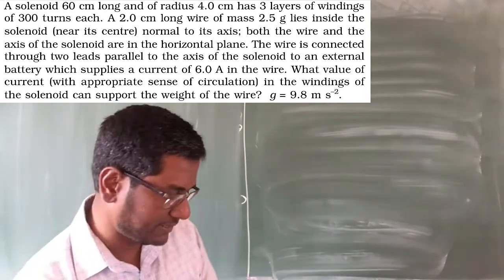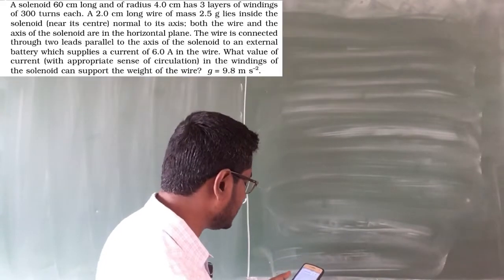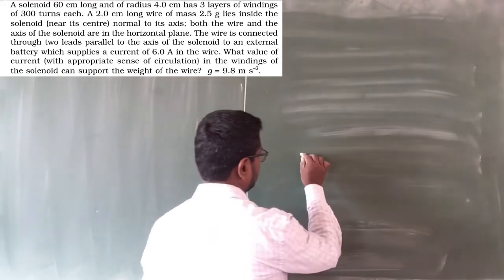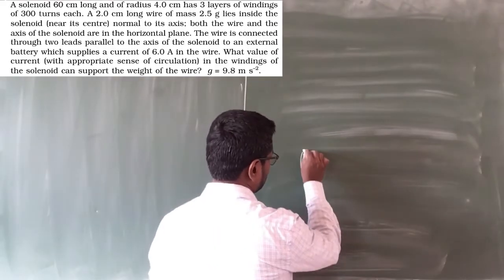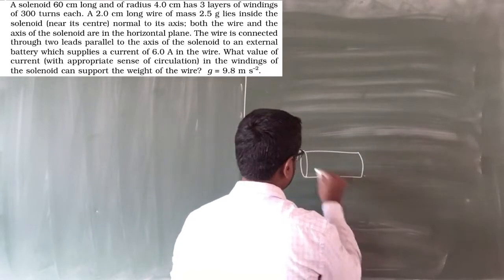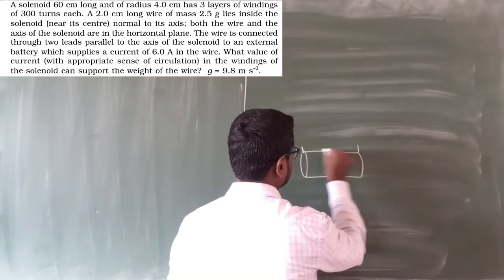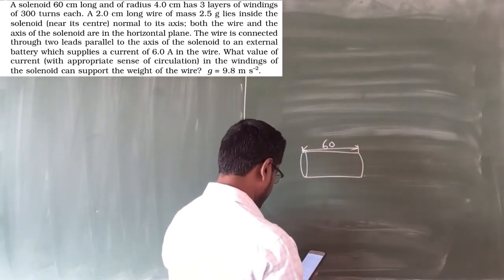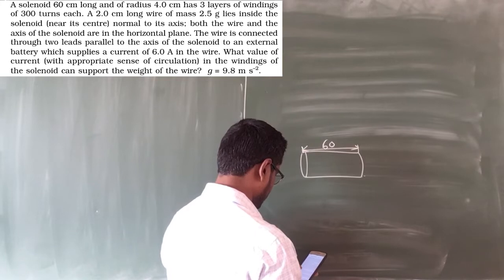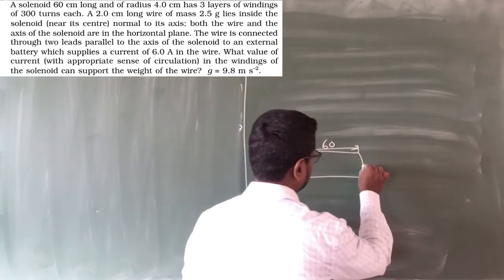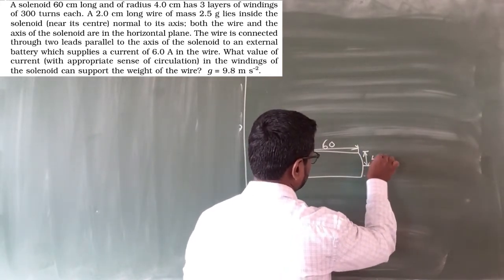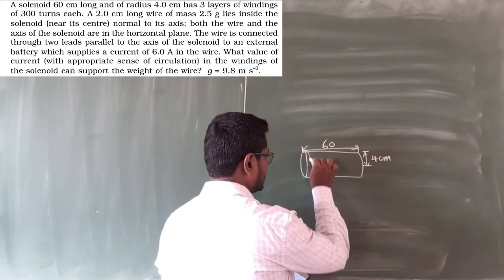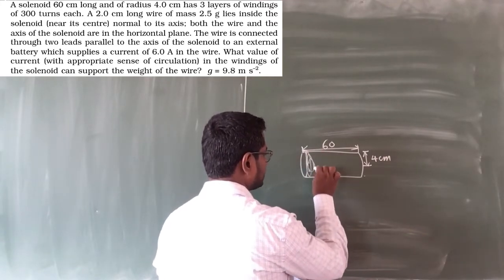So what we have here is a solenoid which is 60 cm long and has a radius of 4 cm. Let us draw the solenoid — it is 60 cm long with a radius of 4 cm. It is not a single layer but has 3 layers of winding.